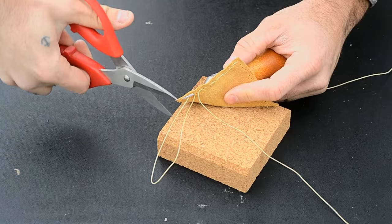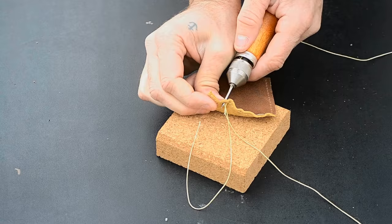Now take some scissors, cut the thread close to the needle side. Now you can pull your needle out and set aside.